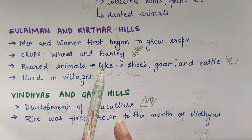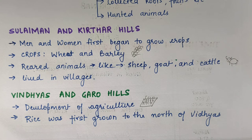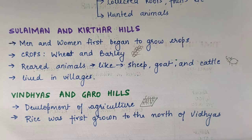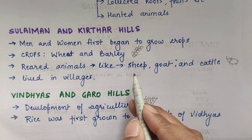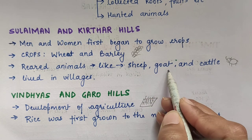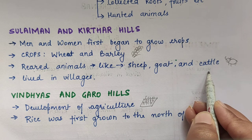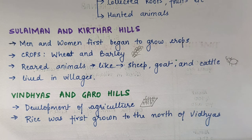They reared animals — reared animal means they were domesticating animals. We cannot rear lion or tiger, so which kind of animals were they rearing? Sheep, goats and cattle — these were the major animals they were rearing.